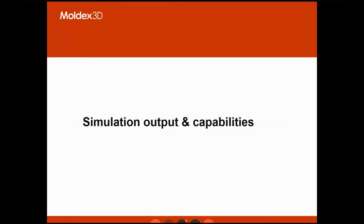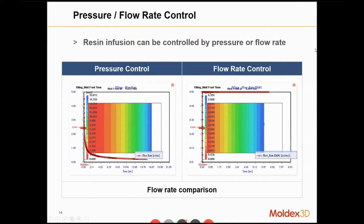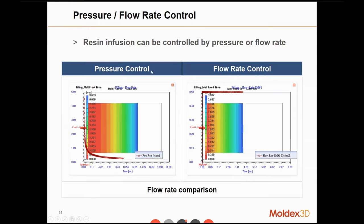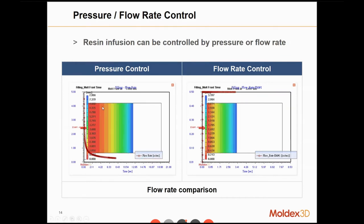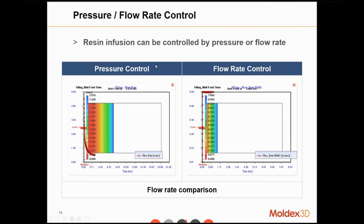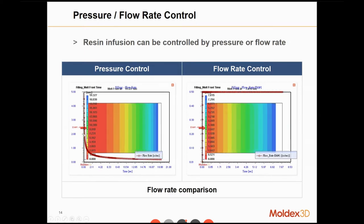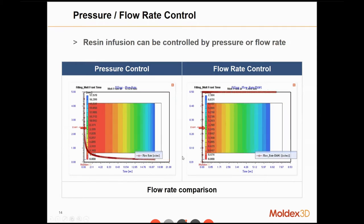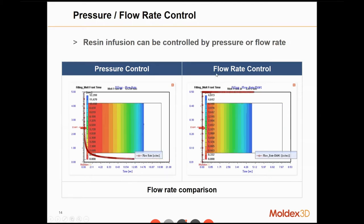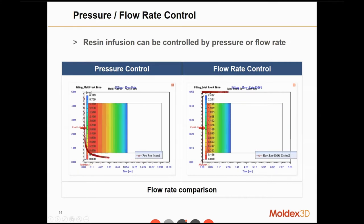Now let's check what Moldex3D outputs and its capabilities. This shows a comparison between two kinds of flow front control: pressure control on the left and flow rate control on the right — similar to settings in normal injection molding. With pressure control using a constant pressure, the flow rate gets lower over time, because it gradually becomes harder to push the melt front forward. With flow rate control, we keep the flow rate constant, and the history curve stays flat.